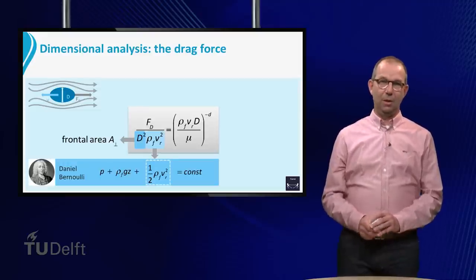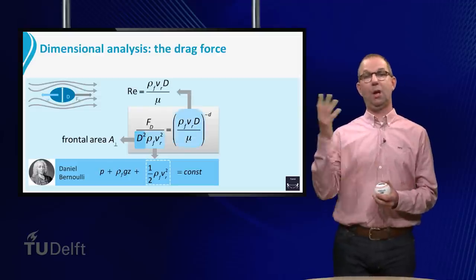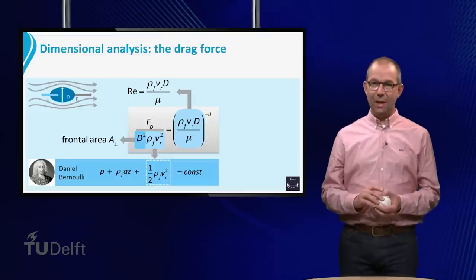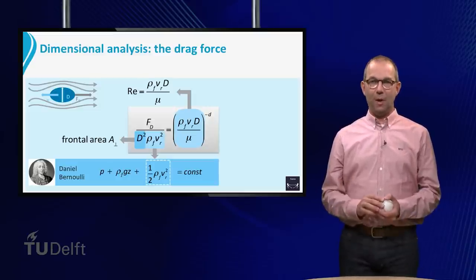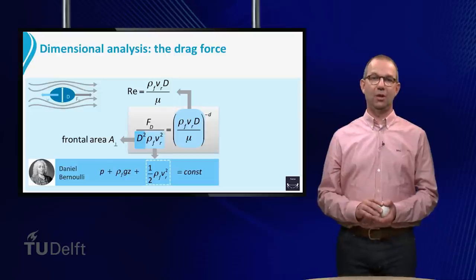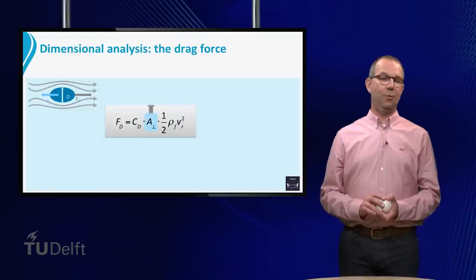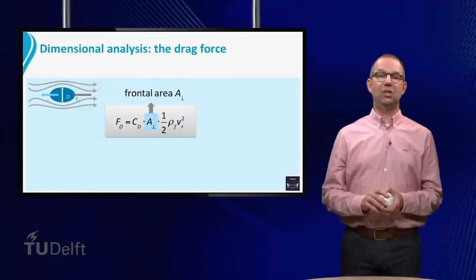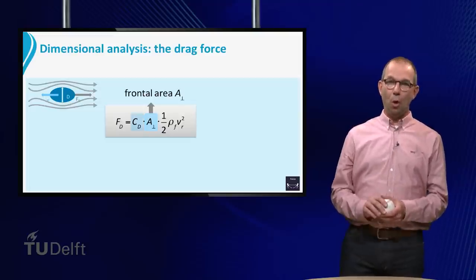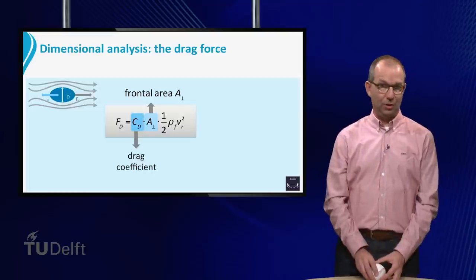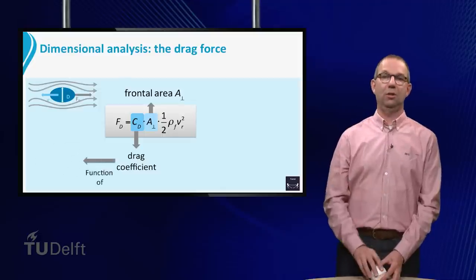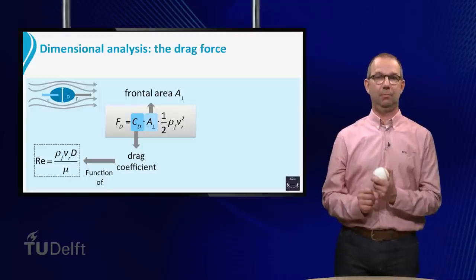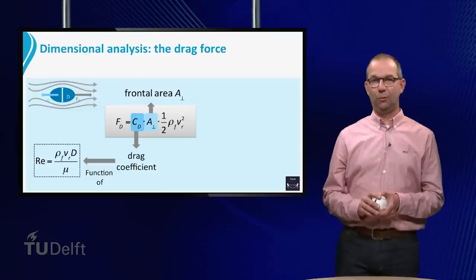Let's go back to the drag equation. The right hand side contains the Reynolds number to some unknown power. Rather than the Reynolds number to some power d, the dimensional analysis tells us that the drag force is some unknown function of the Reynolds number. We can now write the drag force in terms of the frontal area, the pressure head and the unknown function. This is the general form of the drag force. The coefficient c sub d is called the drag coefficient. As we have seen, it is not a constant. It is a function of the Reynolds number based on the relative velocity.